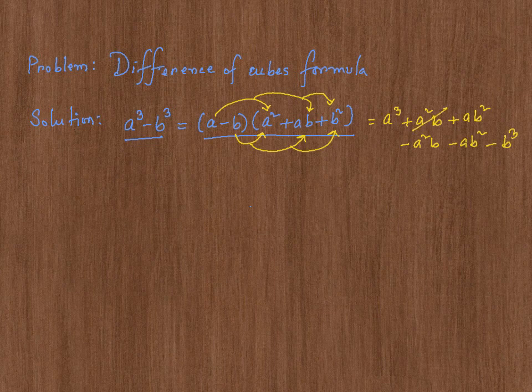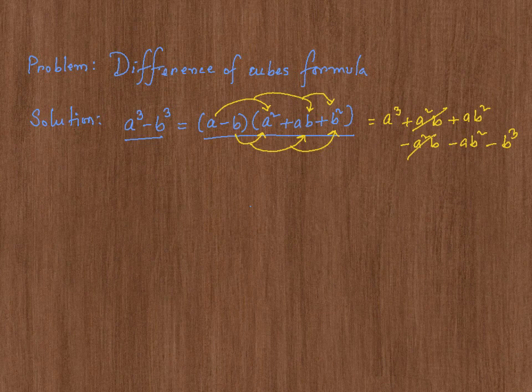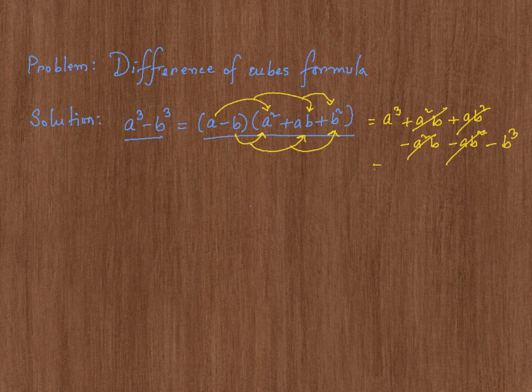Now, look, this and this cancel out because a square b plus a square b minus a square b is zero. Then ab square positive and negative ab square cancel out. That leaves you with a cube minus b cube.